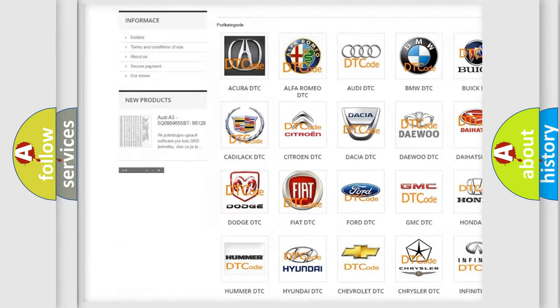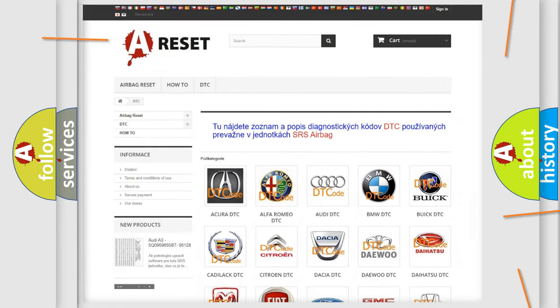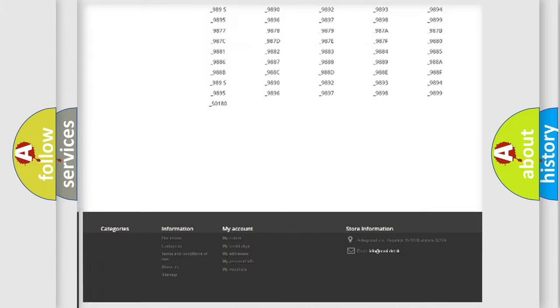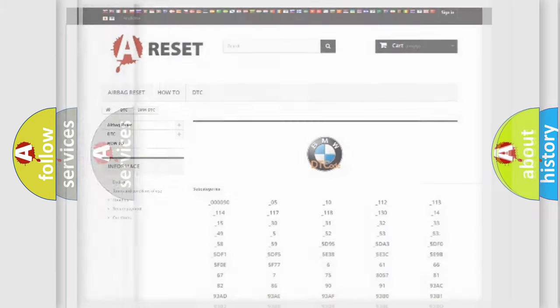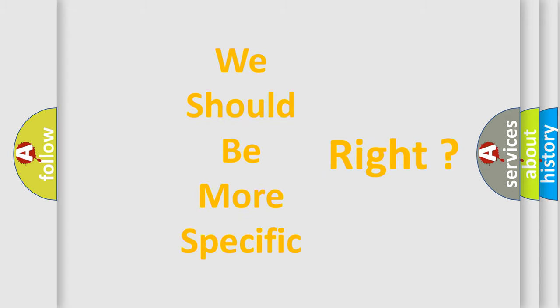Our website airbagreset.sk produces useful videos for you. You do not have to go through the OBD2 protocol anymore to know how to troubleshoot any car breakdown. You will find all the diagnostic codes that can be diagnosed in BMW vehicles, and also many other useful things. The following demonstration will help you look into the world of software for car control units.